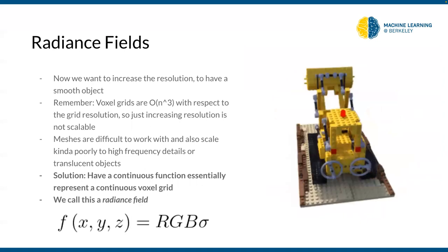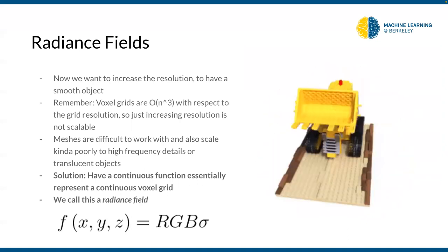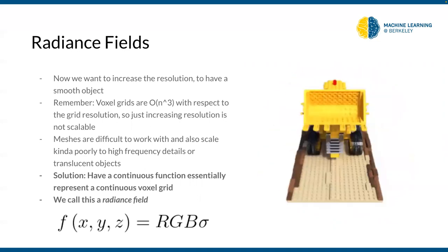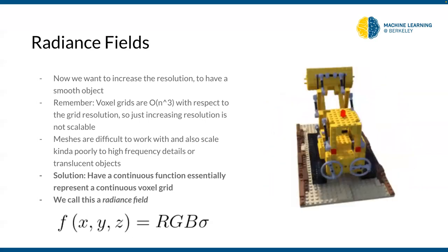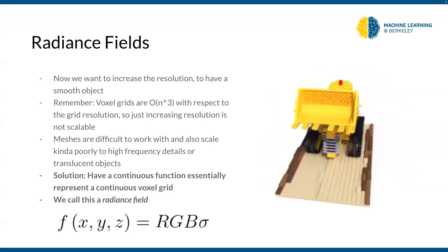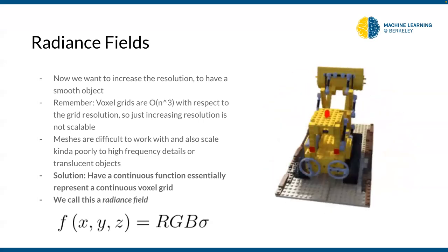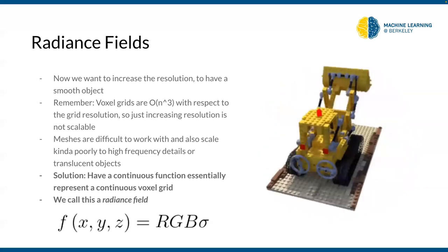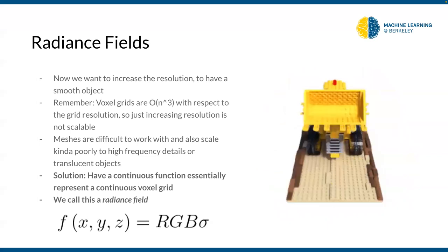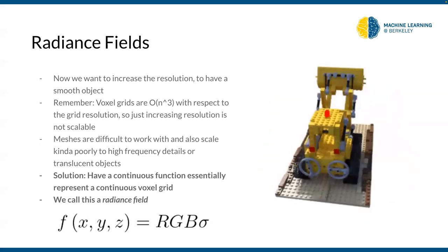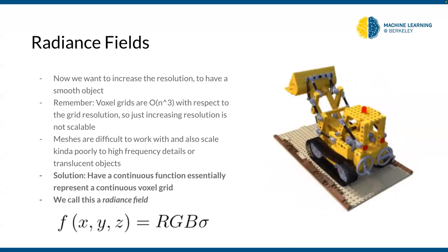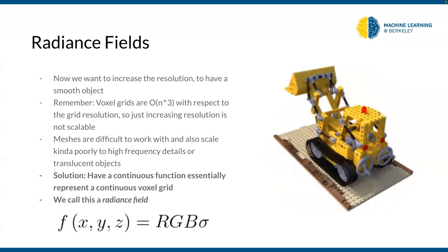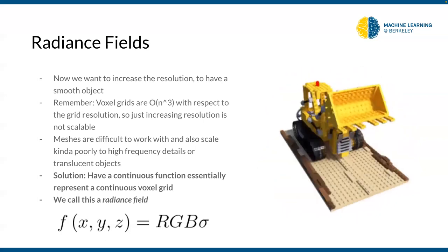So how do we increase resolution? Meshes aren't great for high-frequency details, and voxel grids scale cubically. The solution is the radiance field: a function f that takes xyz coordinates and outputs RGB color and density sigma at that point. It's a continuous function defined everywhere in the space we care about — you can think of it as a continuous voxel grid.